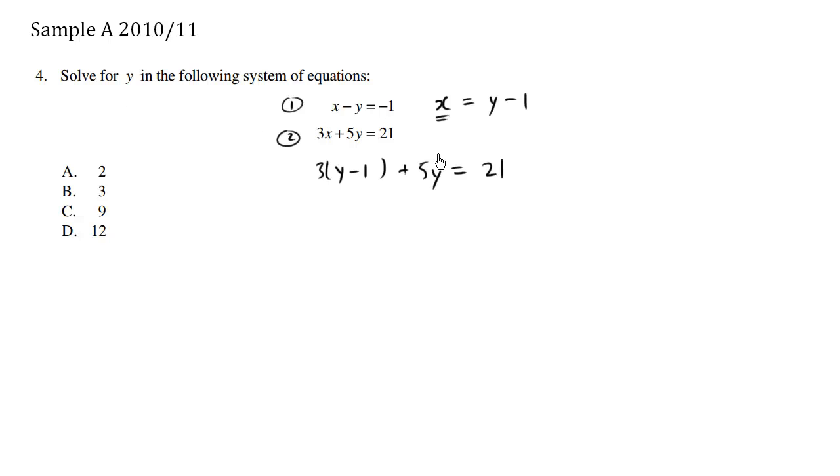I'm trying to solve for it. So what we can do is now, solving for y, and we have all the variables in terms of y's not x's, just use basic algebra. We have 3y minus 3 plus 5y equals 21.